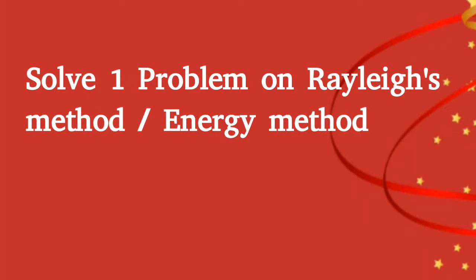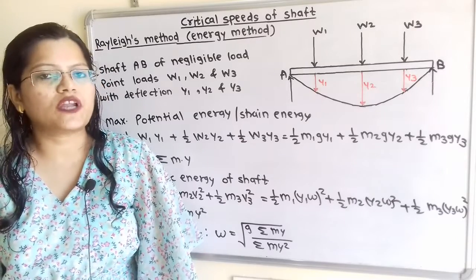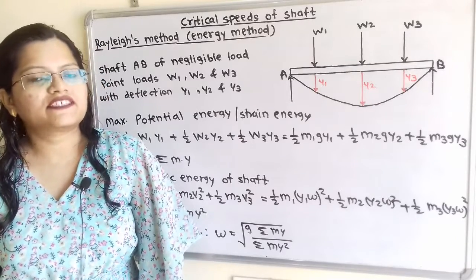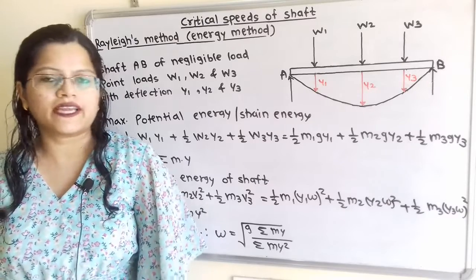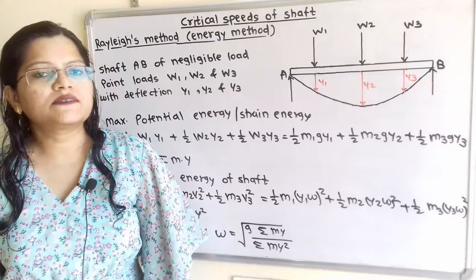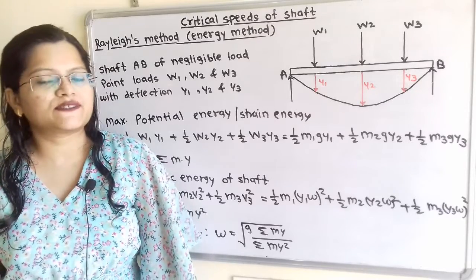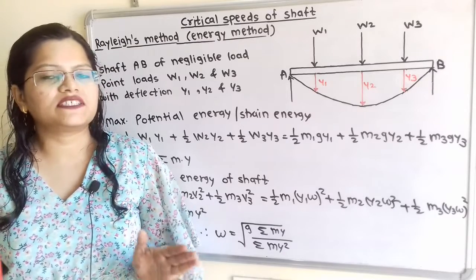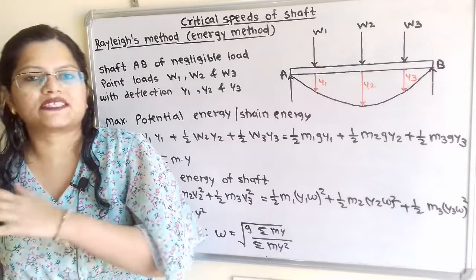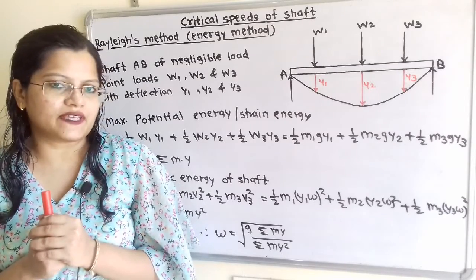Let us understand the formula to calculate the natural frequency of the shaft by using Rayleigh's method or energy method. In this method we have to find out the maximum potential energy as well as maximum kinetic energy. Then maximum potential energy is equal to maximum kinetic energy and then we will get the formula to calculate the frequency.